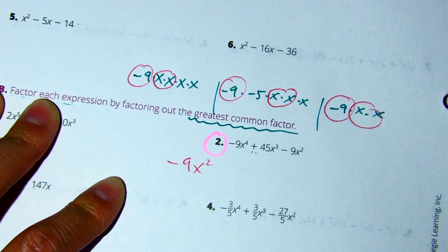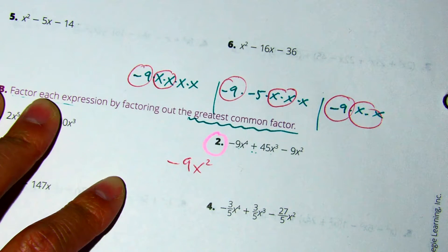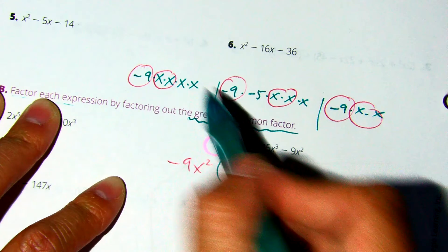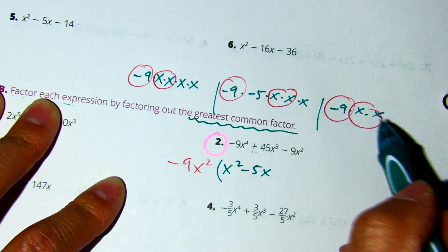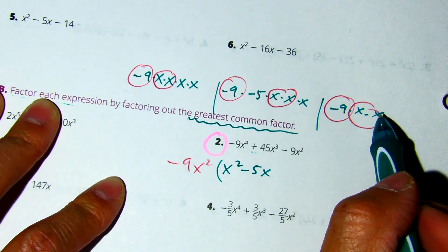Now, I'm going to write everything that's not in red. That would be x squared, negative 5x, and there's no number here. Does that mean I leave a blank class?